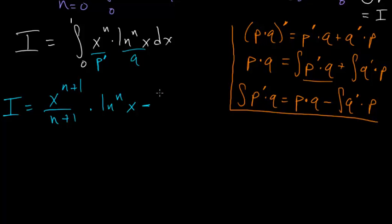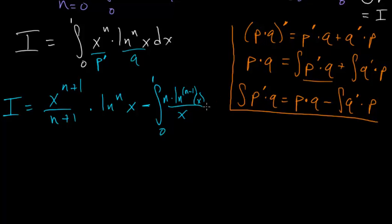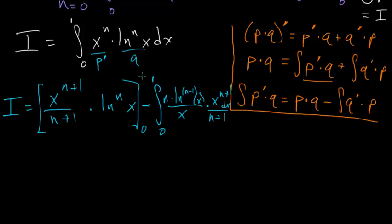Then minus the integral from 0 to 1 of the derivative of q. Using the chain rule, that gives n times ln^(n-1)(x), multiplied by the derivative of ln(x) which is 1/x, multiplied by p, which is x^(n+1)/(n+1), dx.